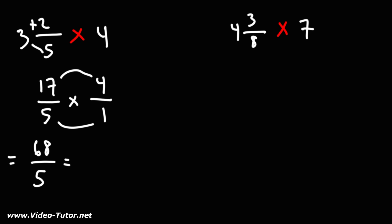The highest multiple of 5 just under 68 is 65. And 68 minus 65 is 3. So 68 over 5 can be written as 65 over 5 plus 3 over 5. 65 divided by 5, that's 13.